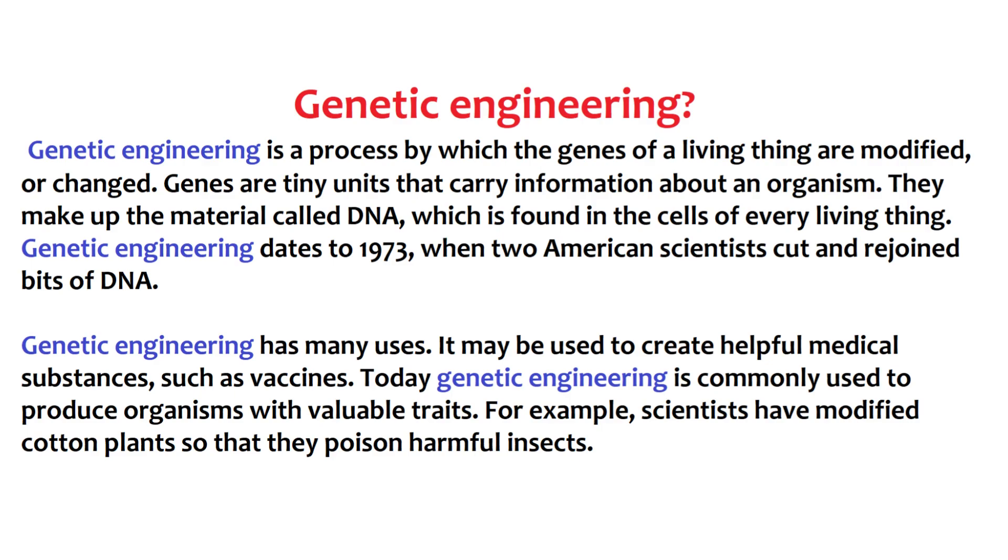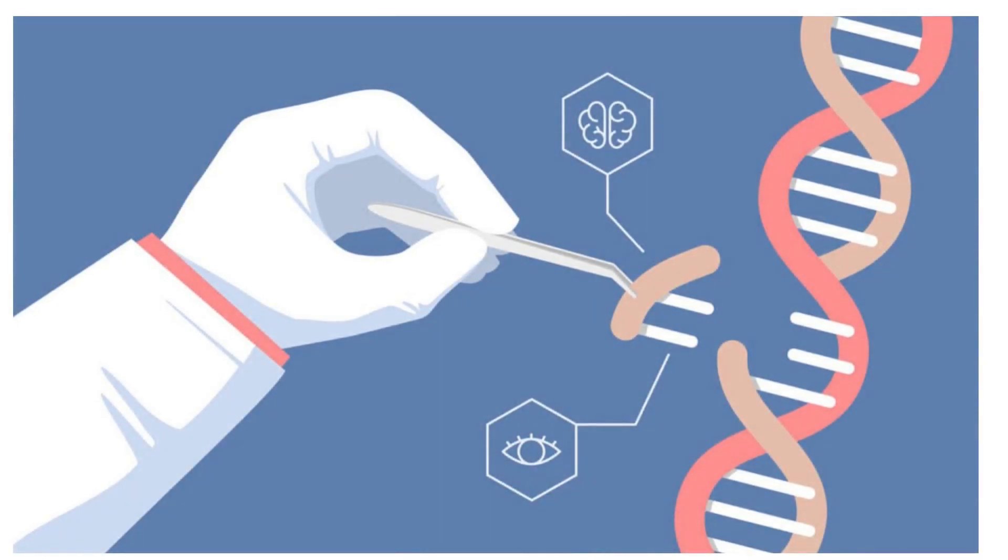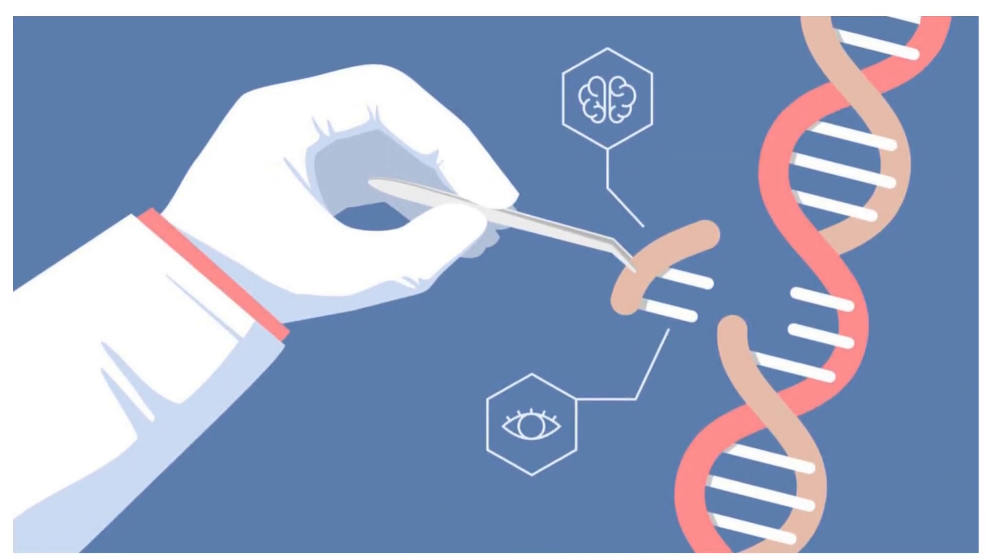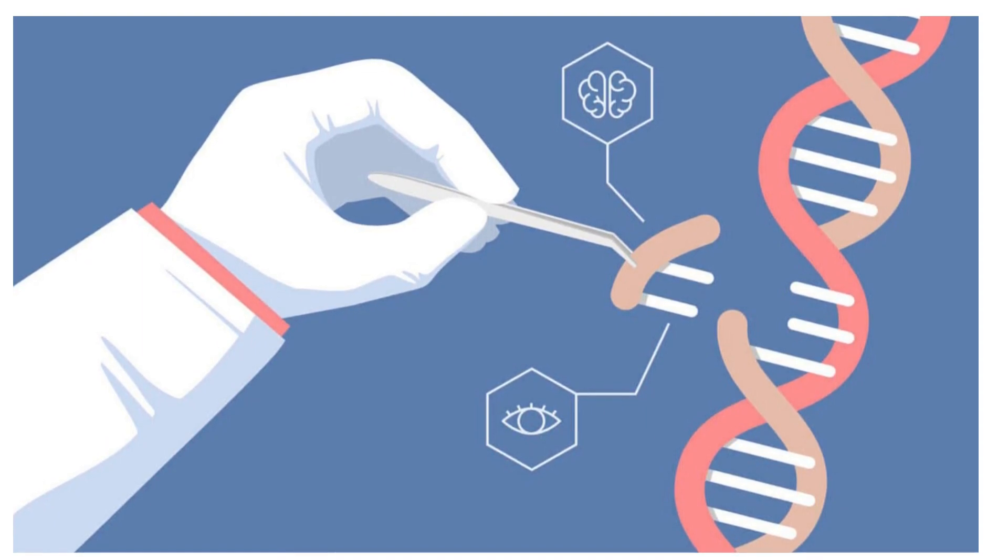Genetic engineering is a process of manipulating or changing a living thing's DNA in order to make the living thing have certain characteristics. DNA is a chemical inside of a cell's nucleus that carries a genetic code. Your hair color, eye color, height, and other physical characteristics are determined by your DNA. Sometimes living things have DNA mutations that can cause things like disease or disabilities.